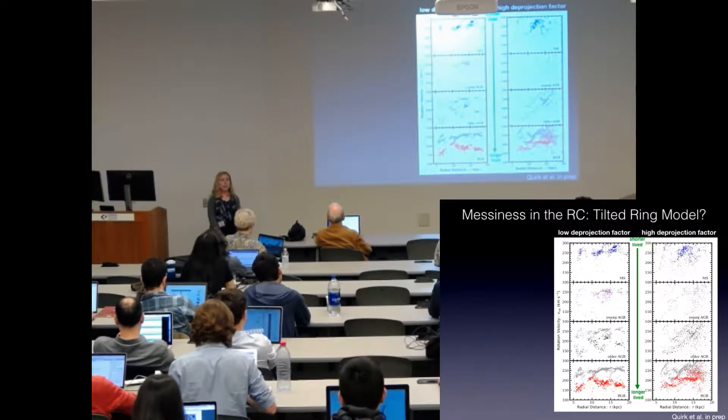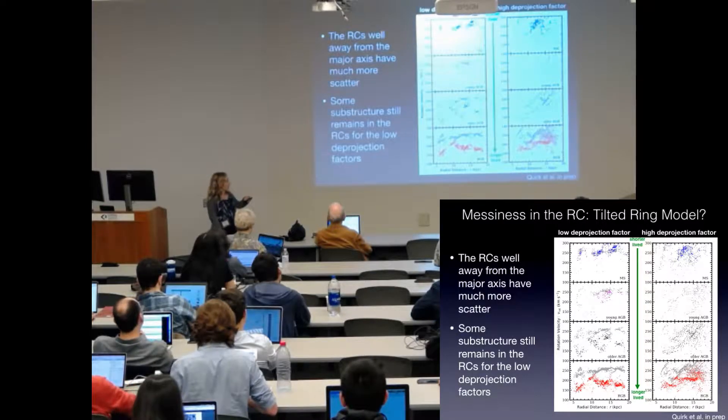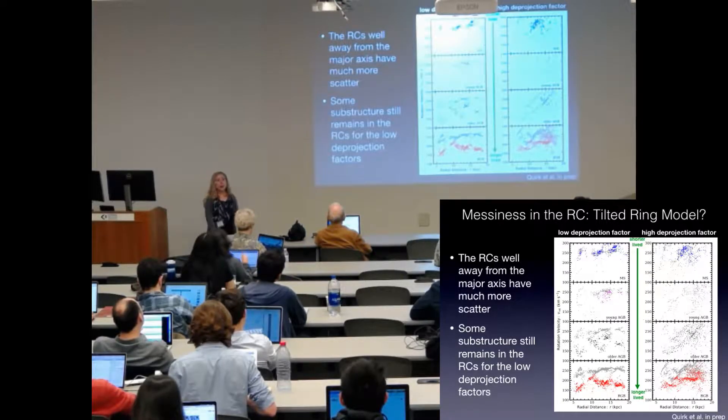So where the model is well behaved, there is less scatter. This has much more scatter. But you can still see that there is substructure in these rotation curves even where the model is well behaved.